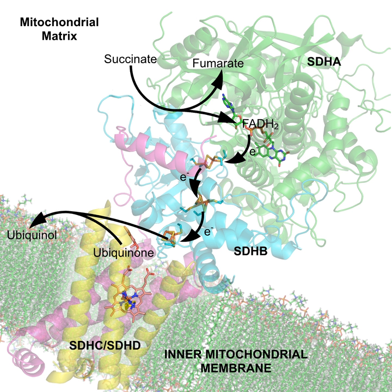Metabolism involves a vast array of chemical reactions, but most fall under a few basic types of reactions that involve the transfer of functional groups. This common chemistry allows cells to use a small set of metabolic intermediates to carry chemical groups between different reactions. These group transfer intermediates are the loosely bound organic cofactors, often called coenzymes. Each class of group transfer reaction is carried out by a particular cofactor, which is the substrate for a set of enzymes that produce it and a set of enzymes that consume it. An example is the dehydrogenases that use nicotinamide adenine dinucleotide as a cofactor; hundreds of separate types of enzymes remove electrons from their substrates and reduce NAD+ to NADH. This reduced cofactor is then a substrate for any of the reductases in the cell that require electrons to reduce their substrates; therefore, these cofactors are continuously recycled as part of metabolism.